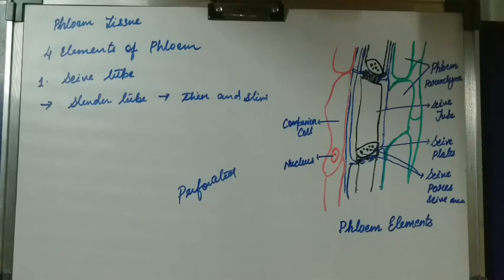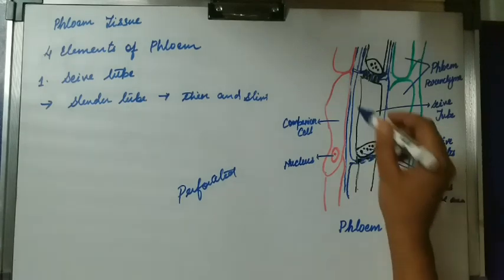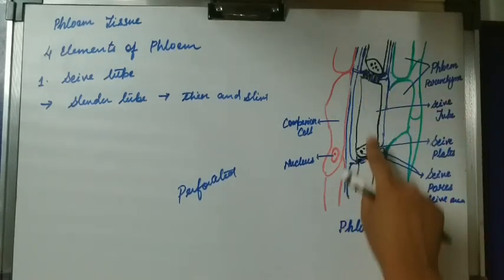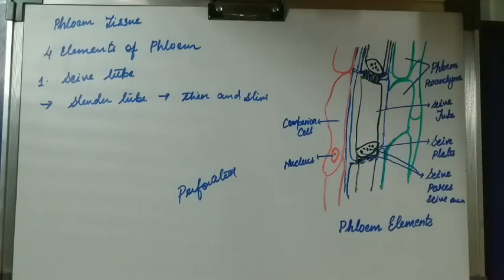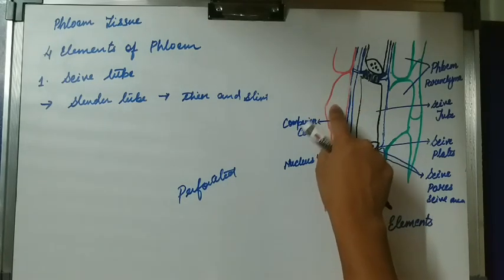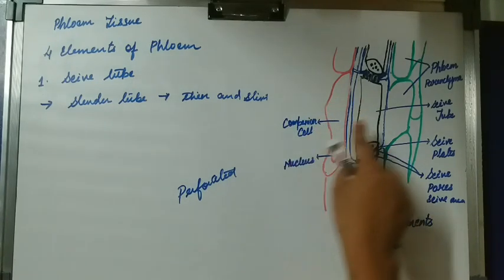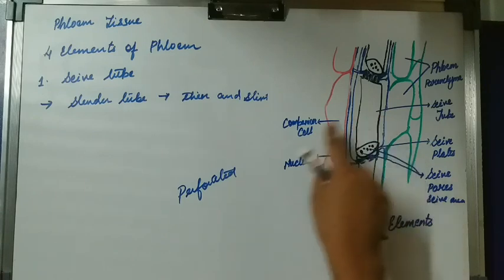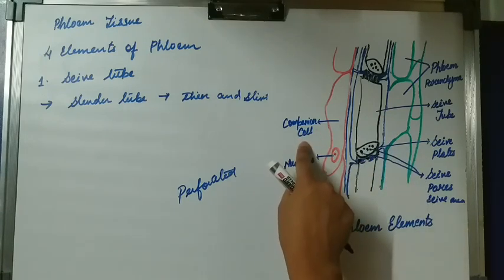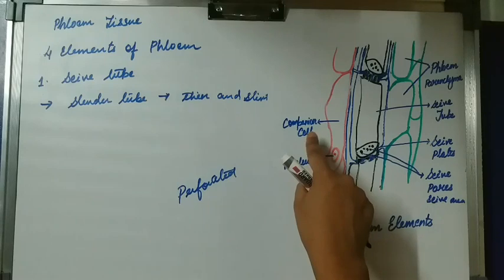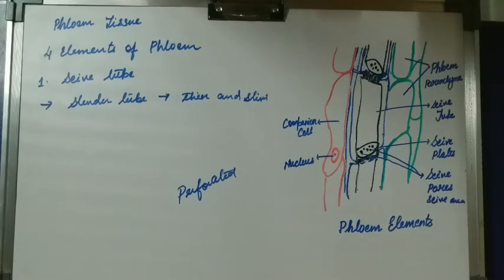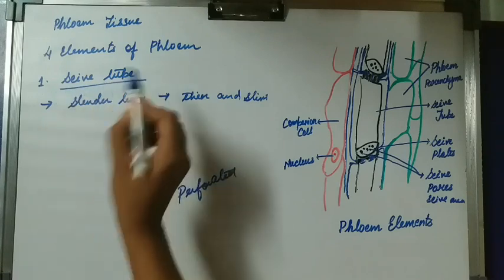On maturity, sieve tubes lack the nucleus. Although they contain a dense cytoplasm, they lack the nucleus and thus become totally dependent on the companion cell, which is present lateral to — at the side of — the sieve tube.